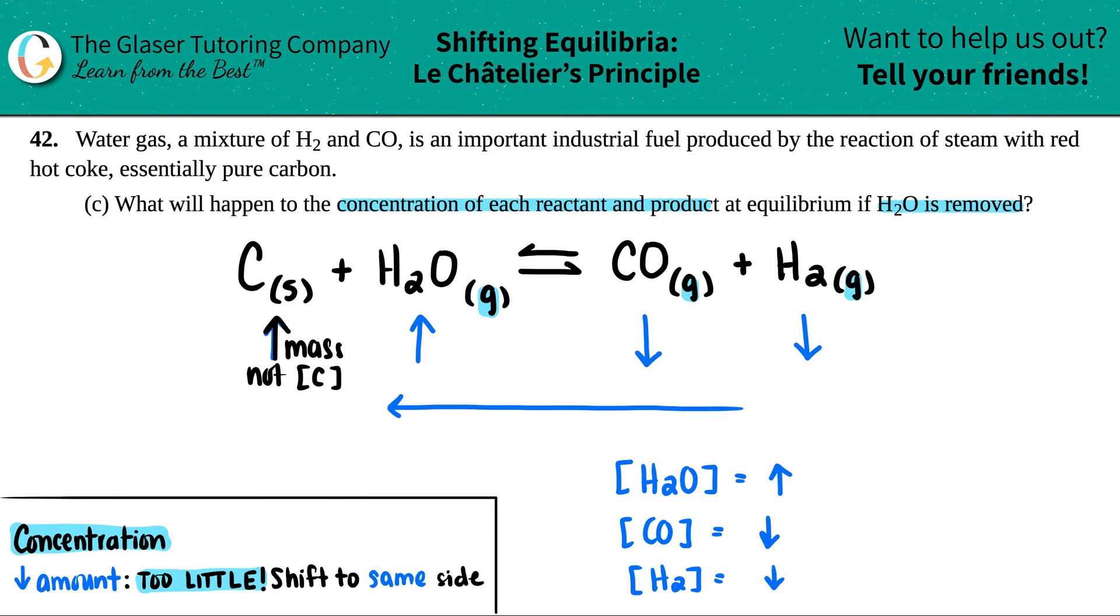That's basically the answer with the solid. They only wanted to know what's going to happen to the concentration. Nothing's going to happen to the concentration here because it's a solid. You're just going to have more mass of it. So for C, this does not exist—no effect. There's no such thing as concentration with a solid, so you don't even write it.